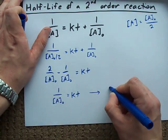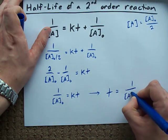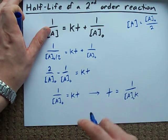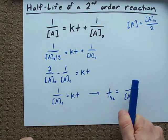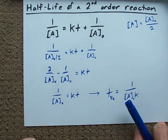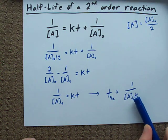And to solve for T, I just divide both sides by K. So, the half-life of a second-order reaction is 1 divided by the initial concentration you started with times K.